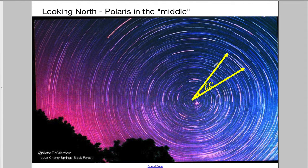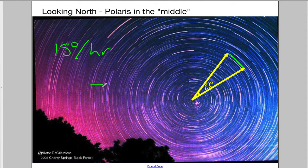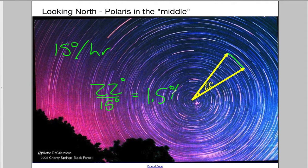Today we're going to focus on one thing. If the angle created is 22 degrees, we need to figure out how long this picture was taken. If you remember from the previous section, the Earth rotates at 15 degrees per hour. So 22 degrees divided by 15 degrees per hour gives us an answer of around one and a half hours. This picture was taken over the course of about one and a half hours.